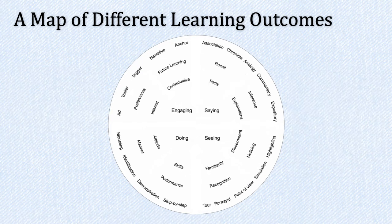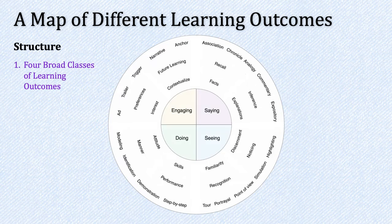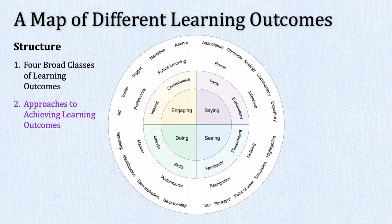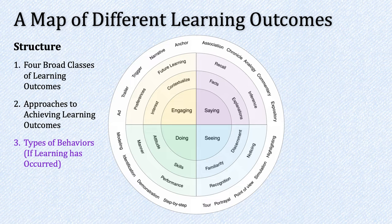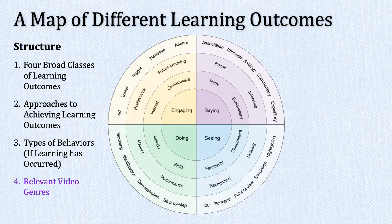Let's zoom out and take a look at this diagram. The structure has basically five levels. In the center we have four broad classes of learning outcomes: seeing, doing, engaging, and saying. From there we move out to different approaches to achieving learning outcomes, then to the types of behaviors we might expect from a learner if learning has occurred, and finally to the relevant video genre that might be applicable for achieving that type of learning outcome.